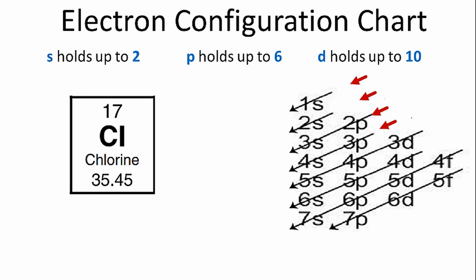We'll use the chart on the right to help us write the electron configuration for chlorine. We'll go down the first row, and we have 1s in the first row. S orbitals can hold up to 2 electrons, so we'll put a 2 after the 1s to show that there are 2 electrons in that first orbital.